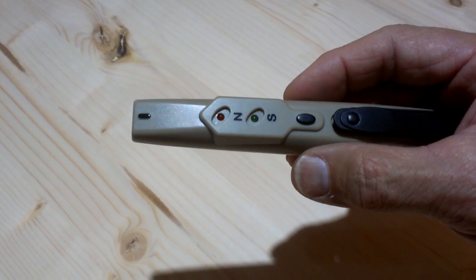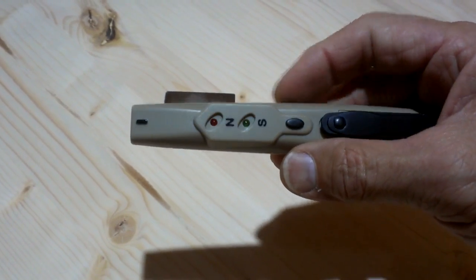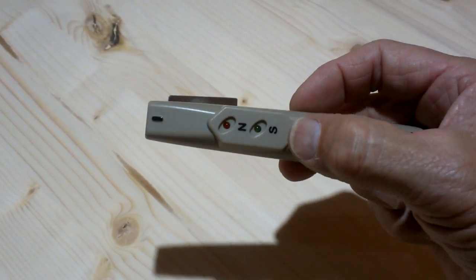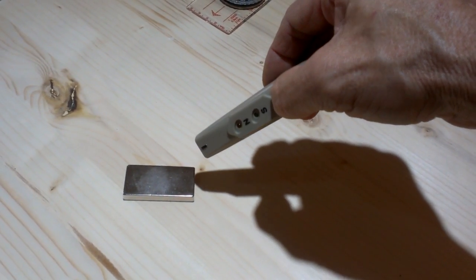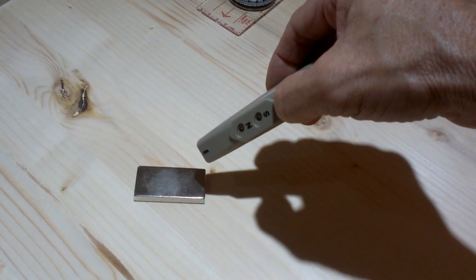This tool is a north pole south pole finder. All I have to do is punch this button with my thumb after I point it towards the magnet, and you can tell that the light lit up on the north, telling us that this face is a north pole.